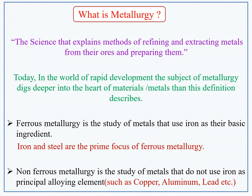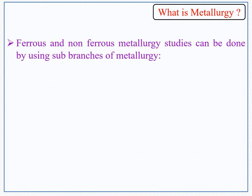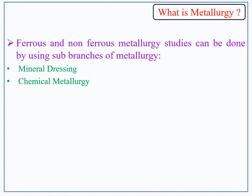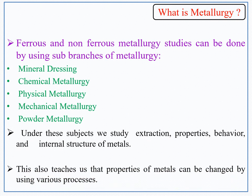Non-ferrous metallurgy is the study of metals that do not use iron as a principal alloying element, such as copper, aluminum, and lead. Metallurgy is more than examining the refinement and extraction of metals from their ores. The ferrous and non-ferrous metallurgy studies can be explored through sub-branches: mineral processing, chemical metallurgy, physical metallurgy, mechanical metallurgy, and powder metallurgy. Under these subjects, we study extraction, properties, behavior, and internal structure of materials and metals.